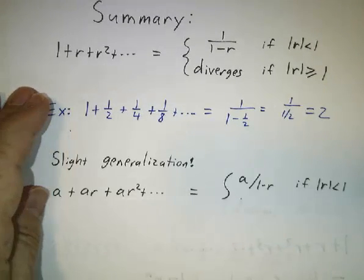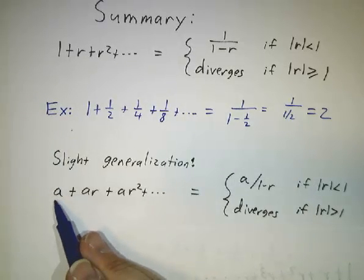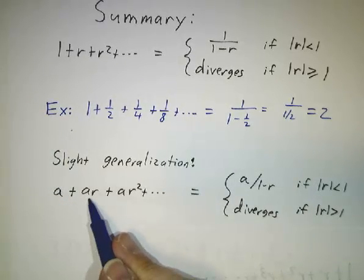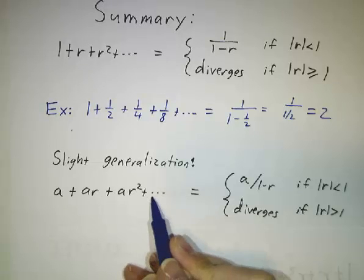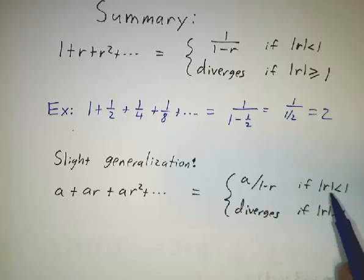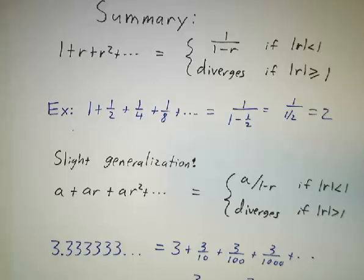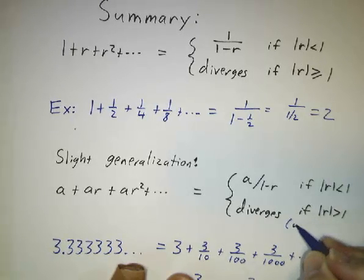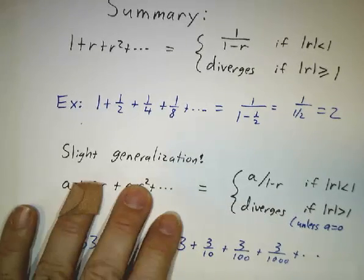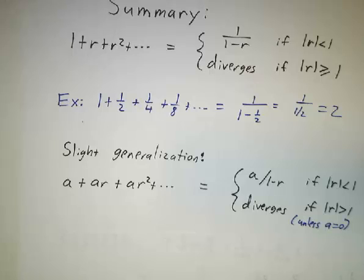Let's generalize a little. If we take any geometric series not just starting with 1, but starting with any number a, and then multiply by r, by r squared, by r cubed, and so on forever, then the sum is a divided by 1 minus r if the absolute value of r is less than 1, and it diverges if r is bigger than 1. The case a equals 0 is just silly — it's 0 plus 0 plus 0 plus 0.